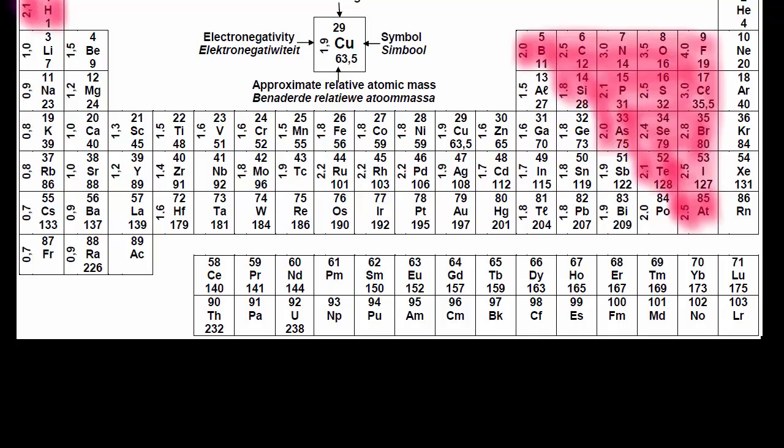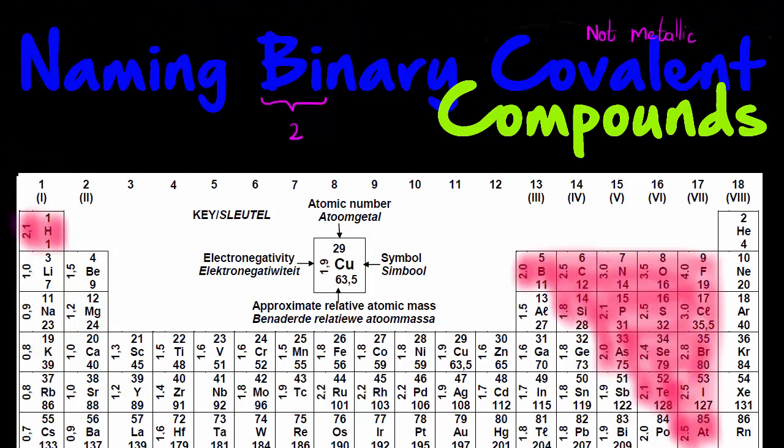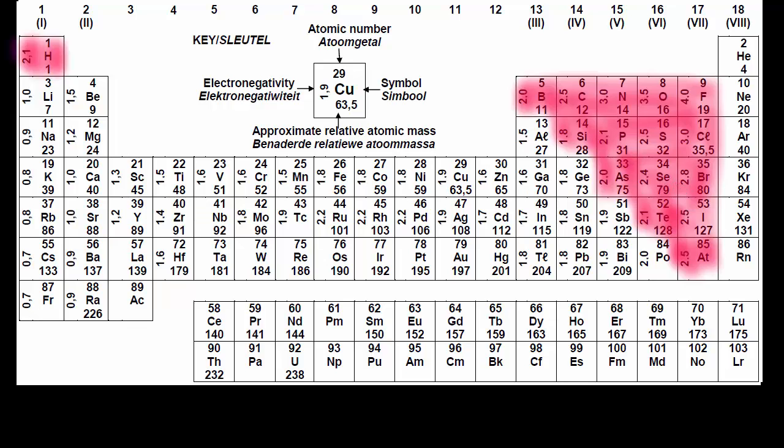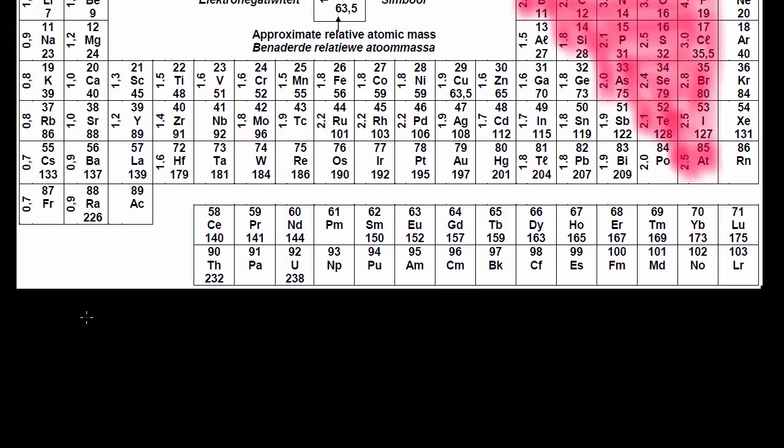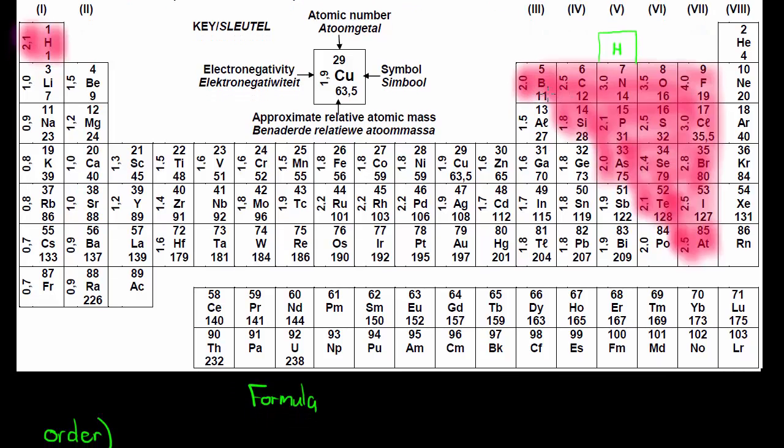So in order to go and write out the formula of two of these interacting, or to write out the name, we first would need to get the formula. And in that formula, which one will we write first? Alphabetically, is there some sort of convention? So in the formula, let's first look at the order. Now the order is slightly strange.